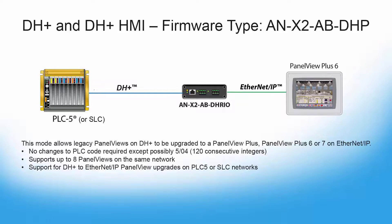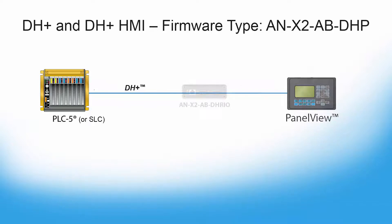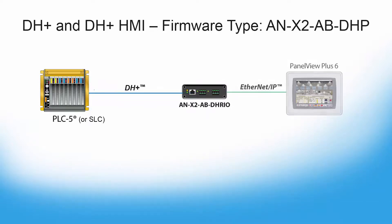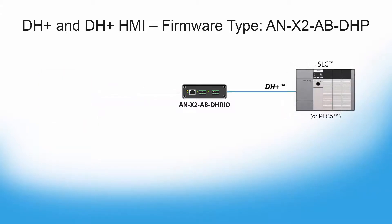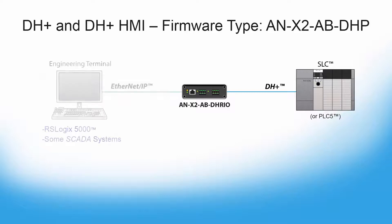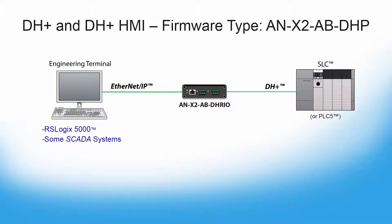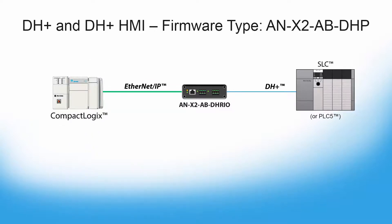The ANX2ABDHP firmware is used for all Ethernet IP to Data Highway Plus applications. Typically you would use it to integrate new Ethernet IP panel views with DHP PLC5s or SLCs. You can also monitor and program a PLC5 or SLC on DHP via RSLogix 5000, or use some SCADA systems to control or monitor Data Highway Plus controllers. It's also possible to message between a Rockwell processor on Ethernet IP and an SLC on Data Highway Plus. Any application that involves interfacing with devices on DHP would require this firmware.